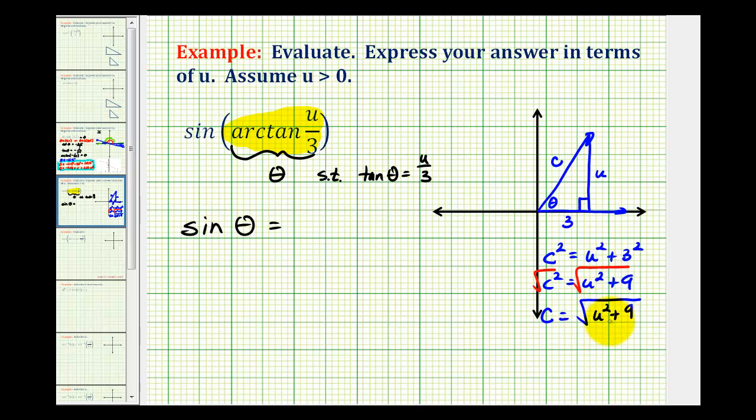Now we cannot simplify this. This is the sum of squares, which does not factor. So this is what c is equal to, which is the length of the hypotenuse.